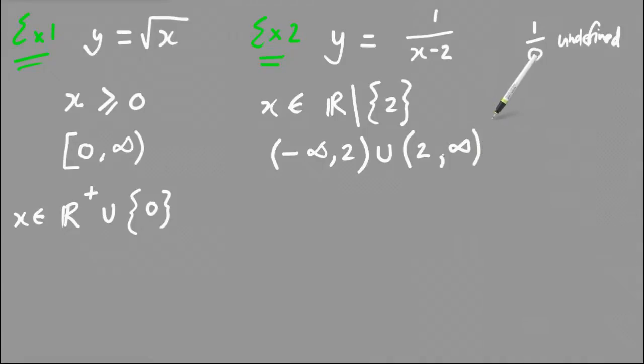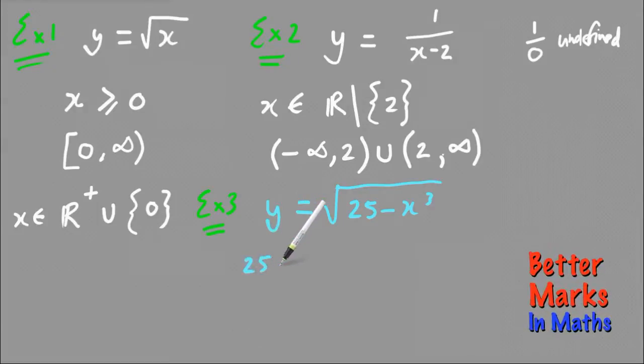up to positive infinity. And that's another way of writing the domain for this function. Another example, and this one is y is equal to the square root of 25 minus x cubed. And once again you've got the square root of something, so that means that what's under here must be positive or equal to 0. So that's all you have to do. Write 25 minus x cubed is greater than or equal to 0 and then solve that.